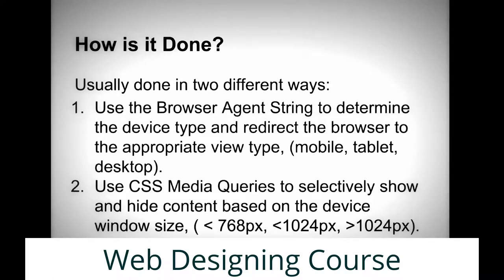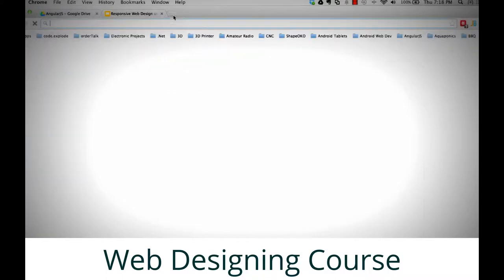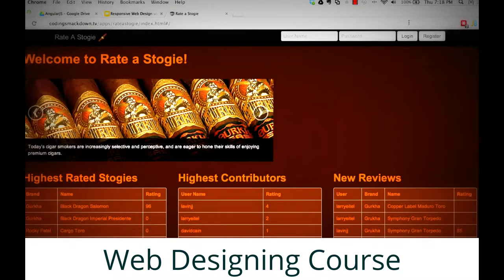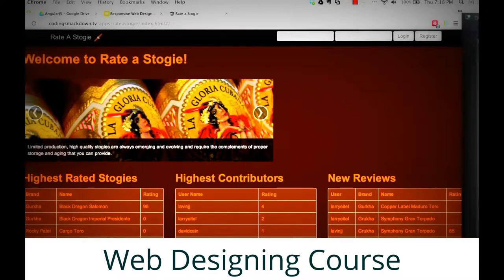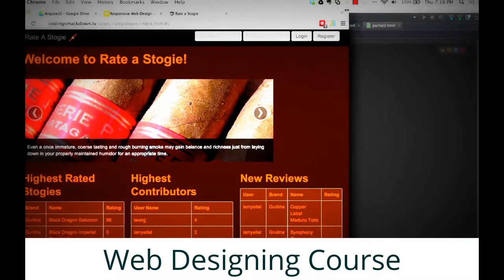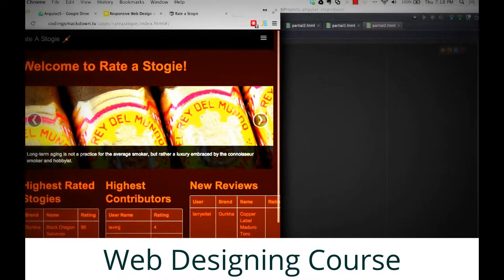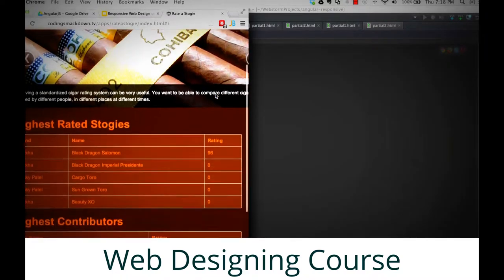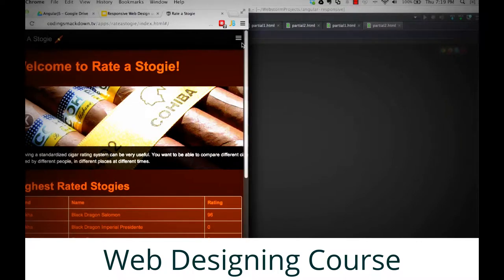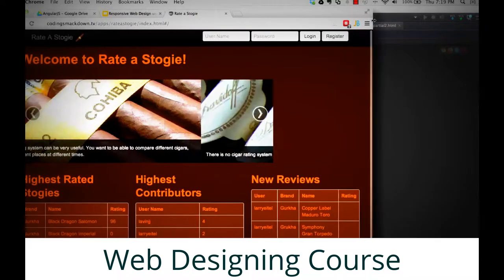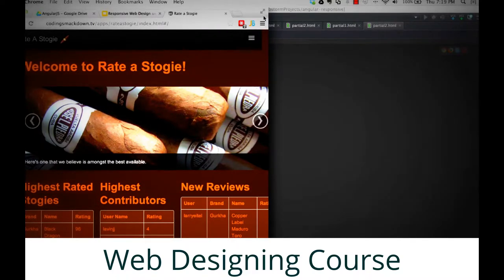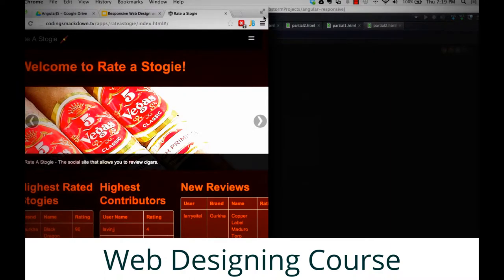Let me give you a quick example of how that works. Here's a little site called Rate of Stogie I worked up a while back, built with Bootstrap. Watch what happens as I resize — things start to collapse and drop down. At a certain point it goes from three columns across to one column up and down, and the menu disappears. As you pull it back out the navigation pane comes back as a dropdown. This is all based on the width of the screen as a viewport.